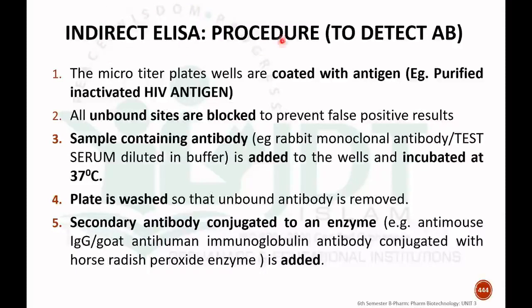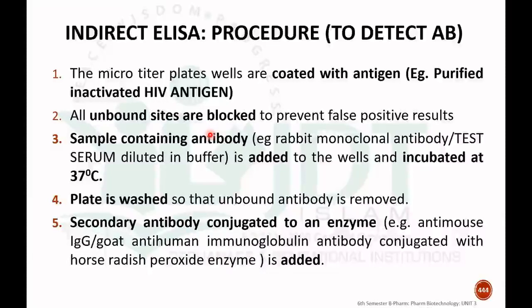The first type is indirect ELISA, used to detect antibodies. The first step involves coating the micro titer plates with antigen. For example, for detection of HIV antibody, the micro titer plate is coated with a purified, inactivated HIV antigen. After coating, all unbound sites are blocked to prevent false positive results. Then the test serum diluted in buffer is added to the wells and incubated at 37 degrees Celsius. The plate is then washed to remove unbound antibody.